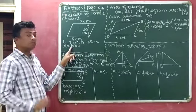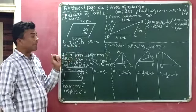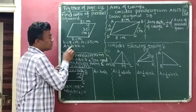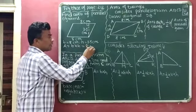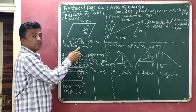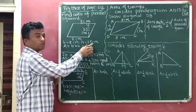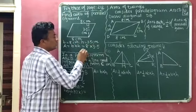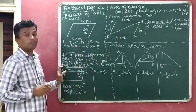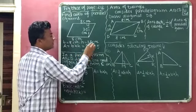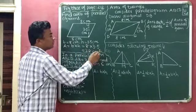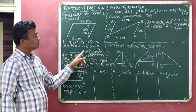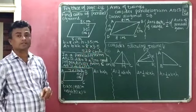Area of the parallelogram is equal to B multiplied by H. Here B is equal to 8 cm and H is equal to 3.5 cm. So 8 multiplied by 3.5 gives 28. The unit is centimeter square, so area of parallelogram is equal to 28 centimeter square.